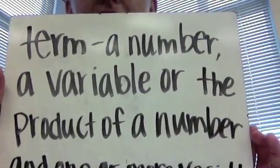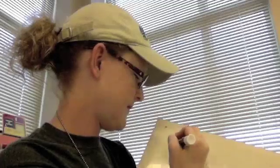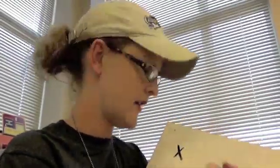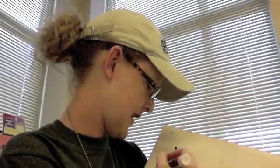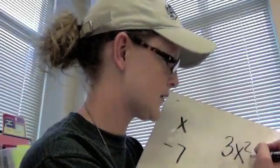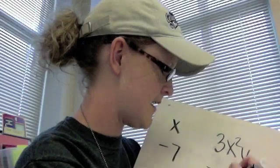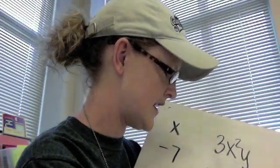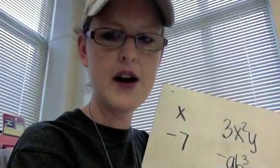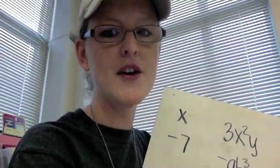We will see these. These are the things being added or subtracted when we're talking about terms. X. X is a term. It's a variable. Or you might have a term that's negative 7. That is also a term. It's a number. Or I could have things like 3x squared y. That's the product of a number and some variables. Or negative a, b, to the third, c, d. Again, just the product of a number and one or more variables. These things are all terms.